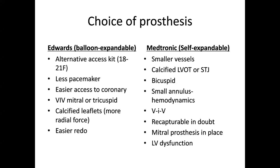The self-expanding valve has better hemodynamics and you can do valve-in-valve in surgical bioprostheses because of better hemodynamics. It is recapturable and can be used if there is a mitral prosthesis in place — the theory being you don't have a balloon that can eject the valve due to the mitral prosthesis. However, the data comparing balloon-expandable and self-expandable didn't show a difference when a mitral prosthesis is in place, so it's not really an advantage of the self-expandable valve.